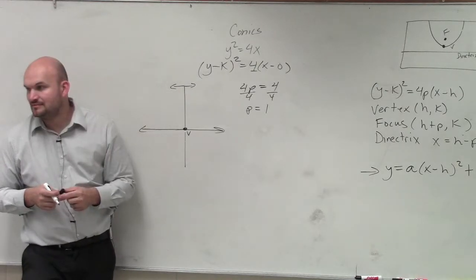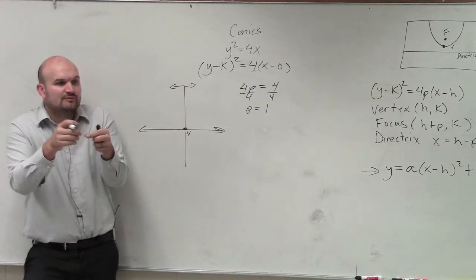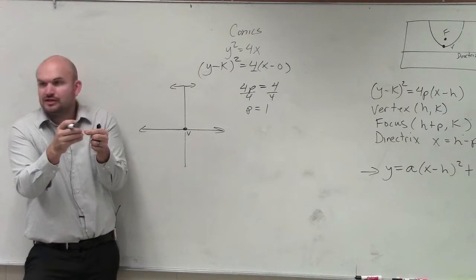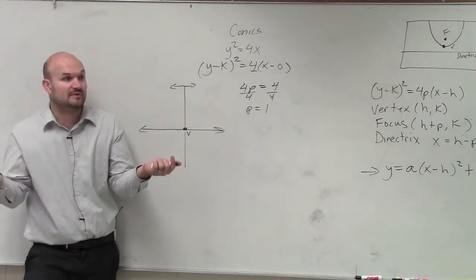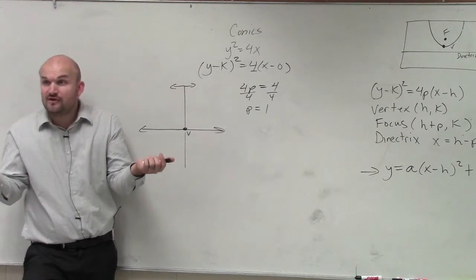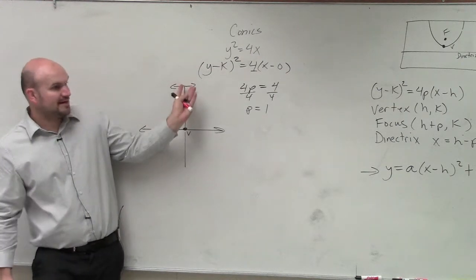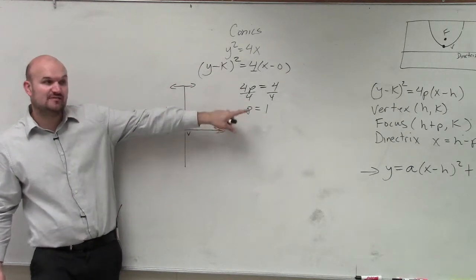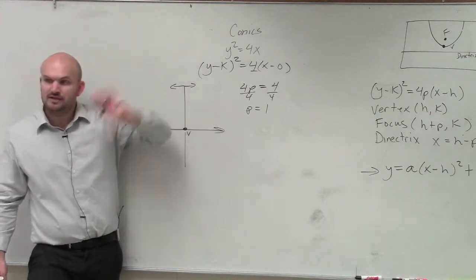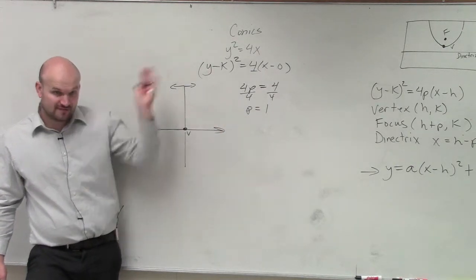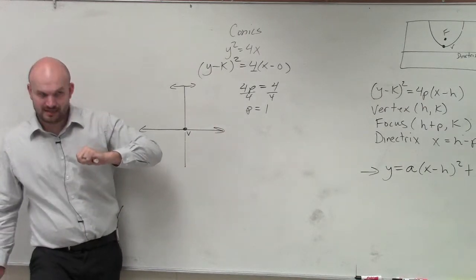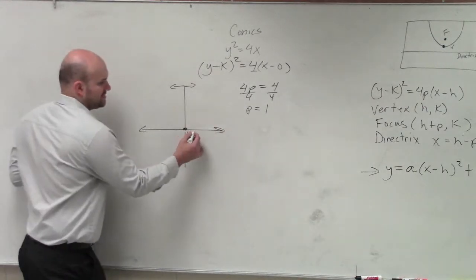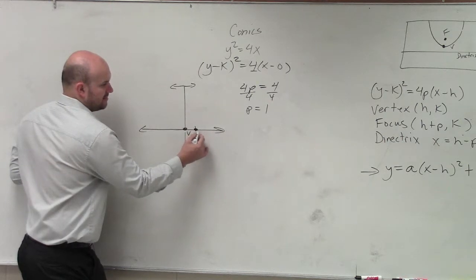Now, look at your graphs again. Where is the focus in relationship to the parabola and to the vertex? The parabola opens up towards the focus. So think about it, guys. If p is positive 1, what that means is we're going to go over to the right, just like going to the right is positive. Going to the left would be negative. So I'm just going to go 1 to the right. I'm going to say that's my focus.